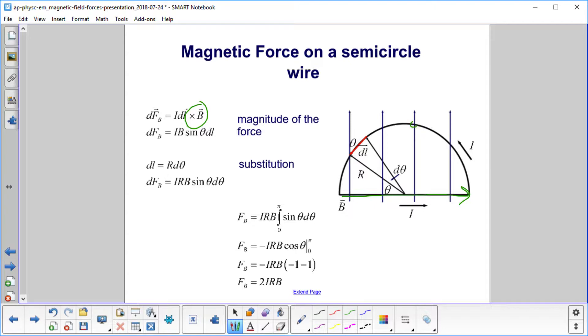However, on the semicircle, here's your I, or your DL. That one's perpendicular. That's good. But look at this one over here. Here's the I, or DL, the length vector. And the magnetic field makes a different angle. So that's true for every single point on the semicircle.